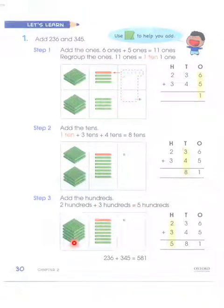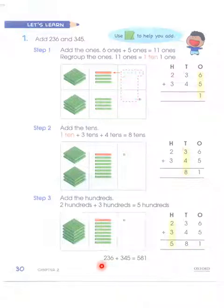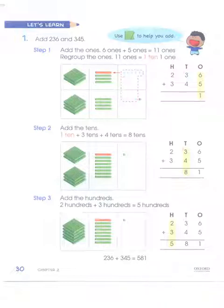So 236 plus 345 is equal to 581: 1 one, 8 tens, and 5 hundreds. This is our way to do this addition.